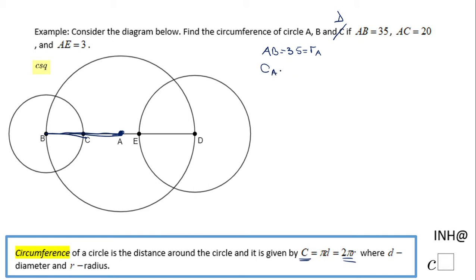So in this case, the circumference of circle A will be 2π times this radius, which will be 70π. The circumference of circle A is 70π.